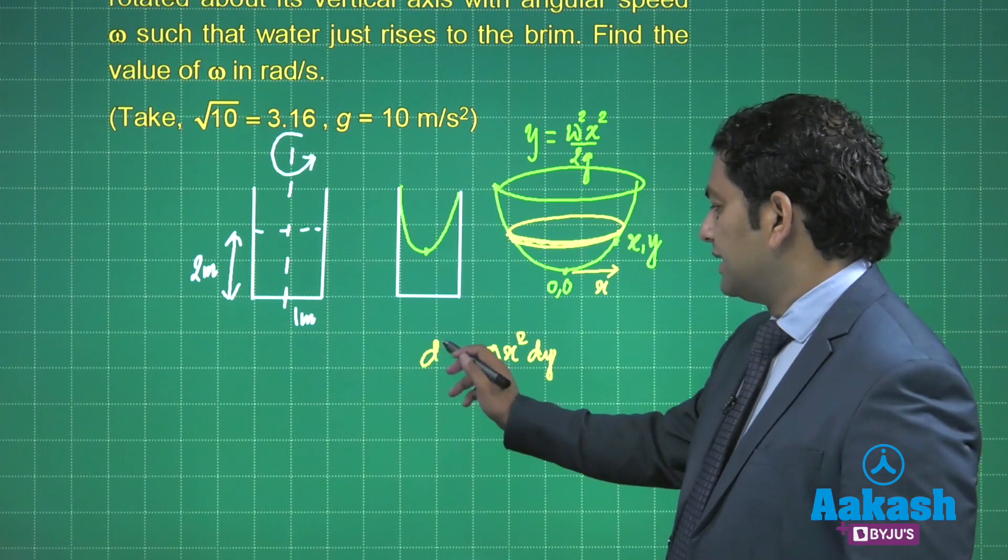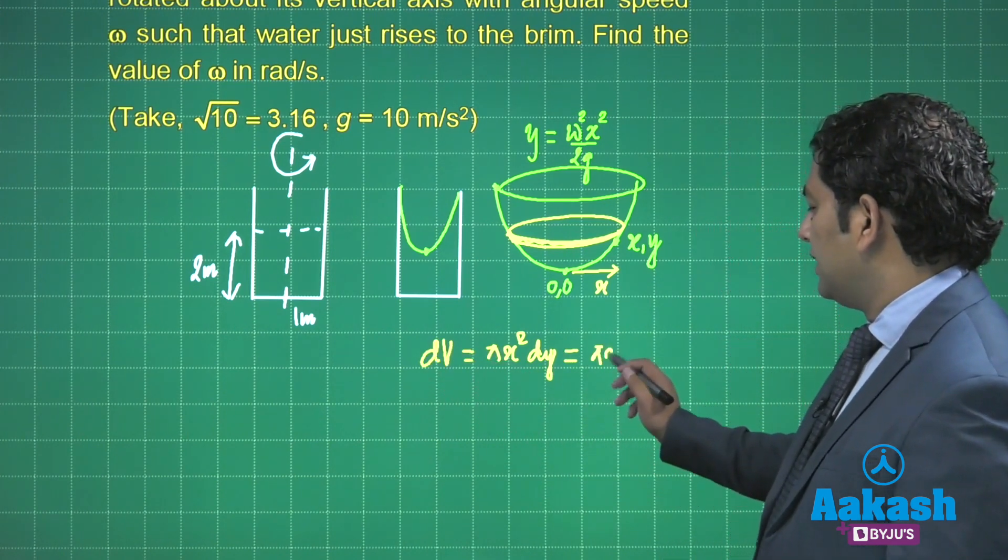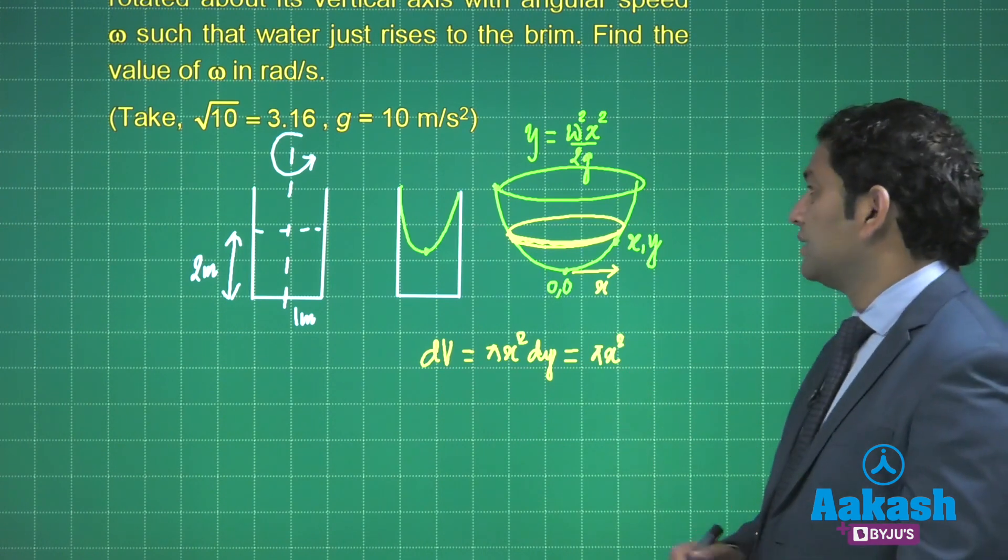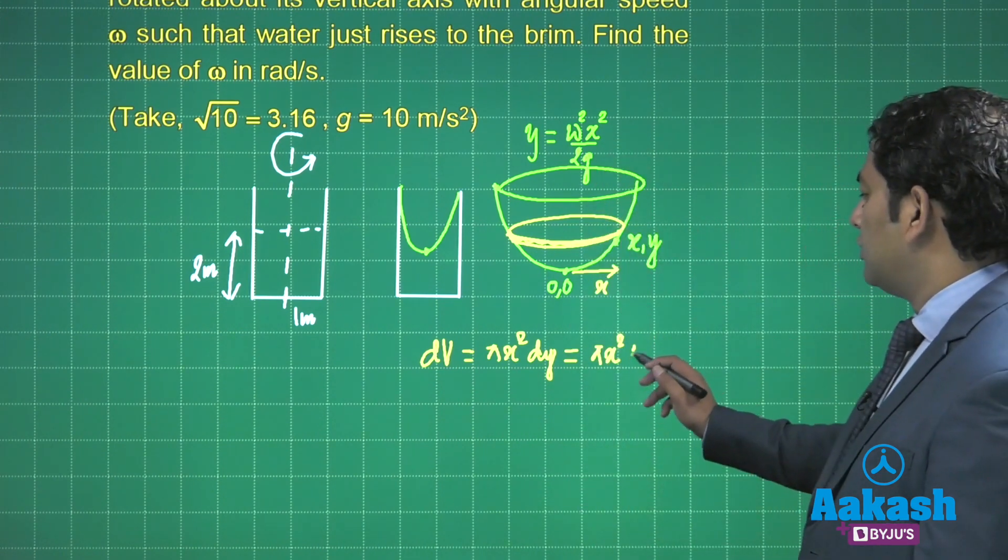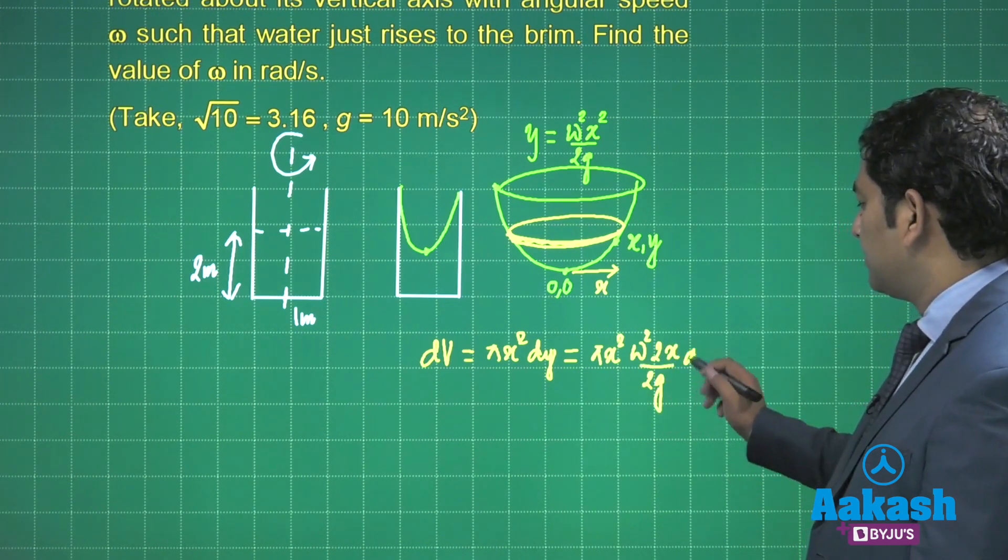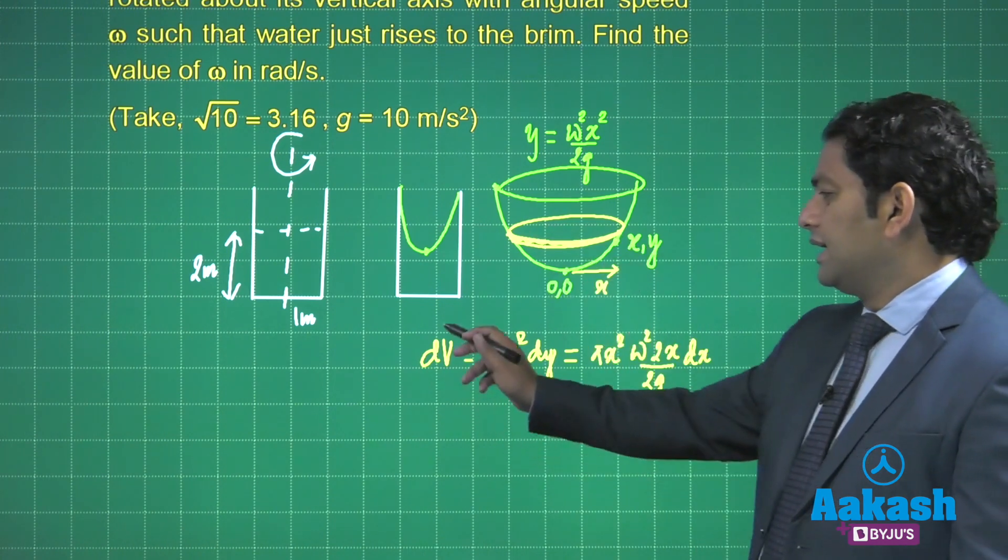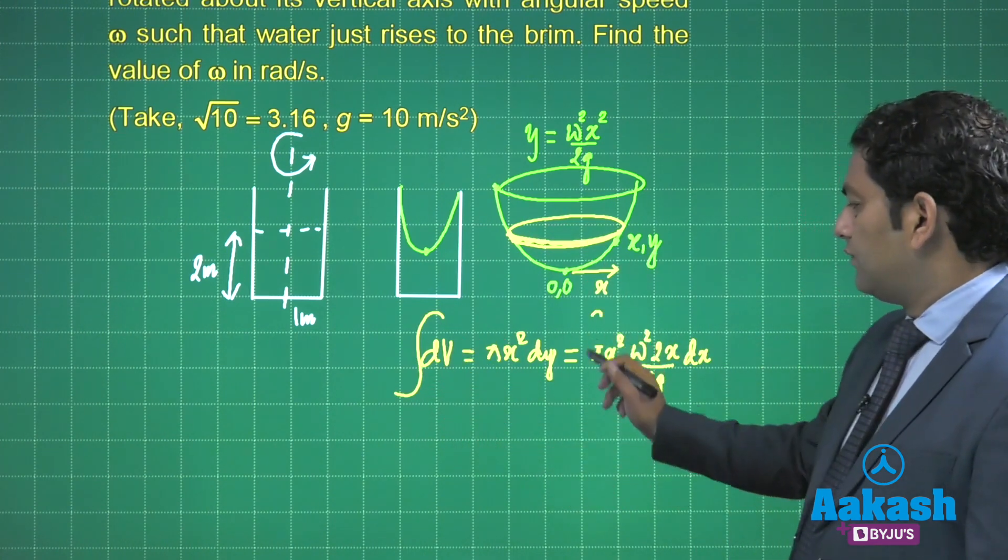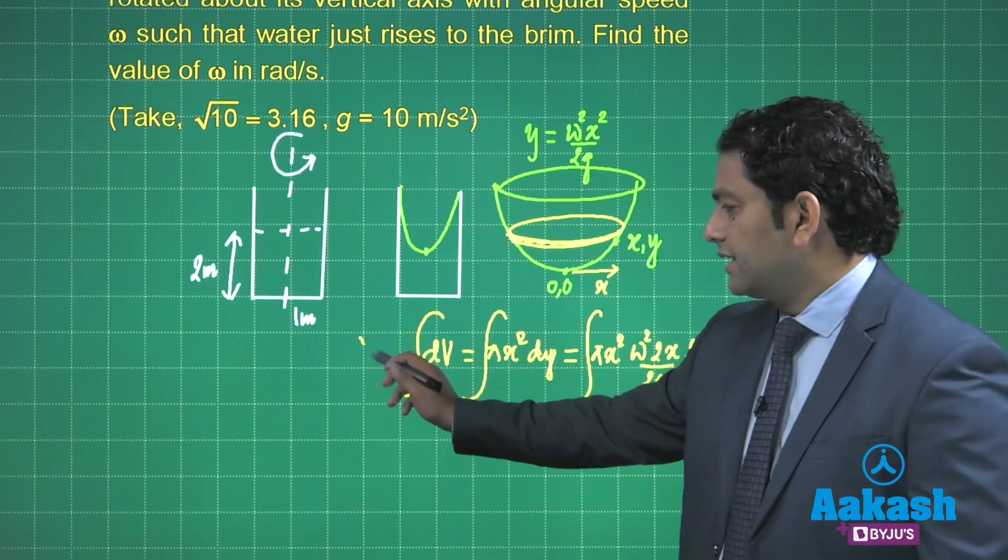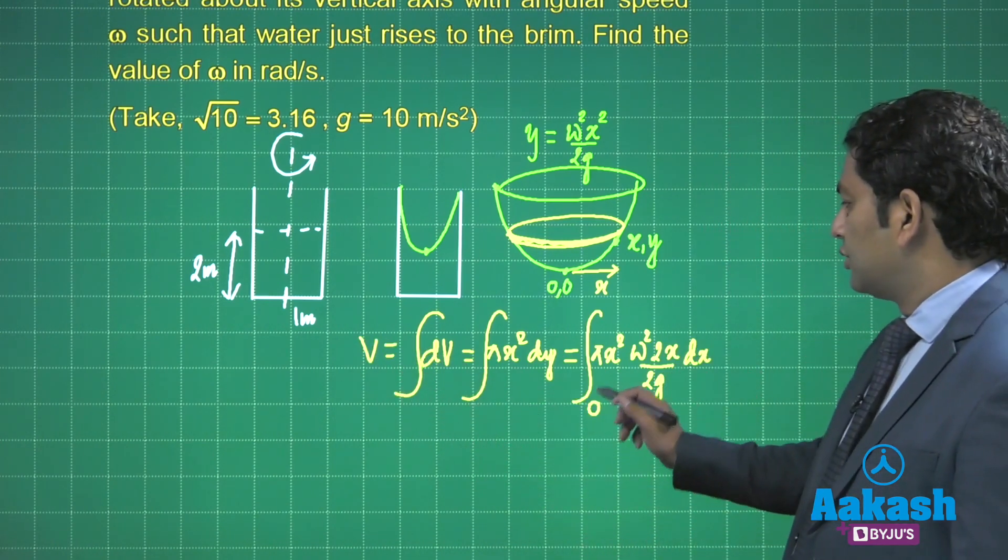That's the elementary volume dV = πx²dy = (ω²·2x)/(2g)dx. That's the volume of this small disk. If I would like to calculate the total volume I need to integrate it, and the limit of x would go from 0 to 1.